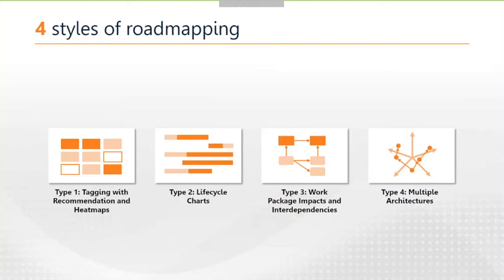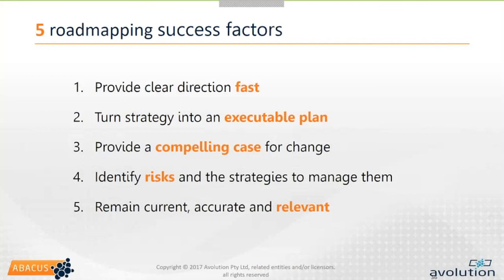That's kind of it for the trip through those four road mapping styles. To quickly recap: tagging and heat mapping will give you a description of the what, providing clear strategic direction. Type 2, life cycle charts, will tell you about the when — when things are going to be commissioned or decommissioned or move from one phase to another. If you want to articulate the how, this is where we start looking at work packages and understanding how they impact the architecture and drive each other. And finally, around the why, this is really about articulating the benefits — with our type 4 multiple architectures road map, quantifying the financial, non-functional, or performance criteria our road maps can deliver to the business. Those five success factors: provide clear direction fast, turn strategy into a plan, make it compelling, manage those risks, and keep it current and relevant.